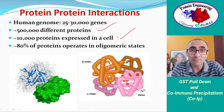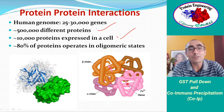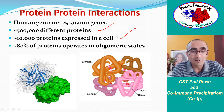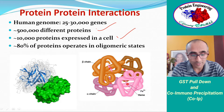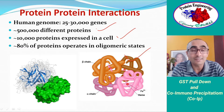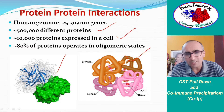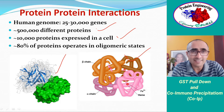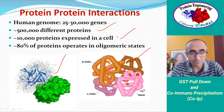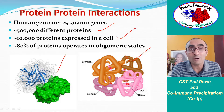Almost 80% of proteins in the proteome work together with other proteins in order to perform their function, and those associations are because of protein-protein interactions. For example, in hemoglobin, four units associate together through protein-protein interactions, and many proteins form oligomeric states to perform their function efficiently in the cytosolic environment.